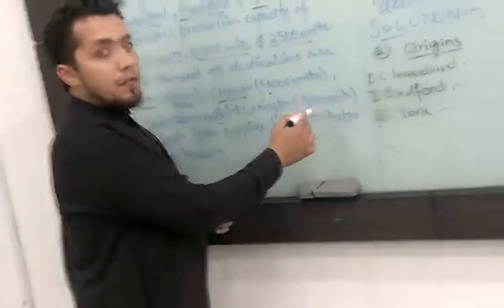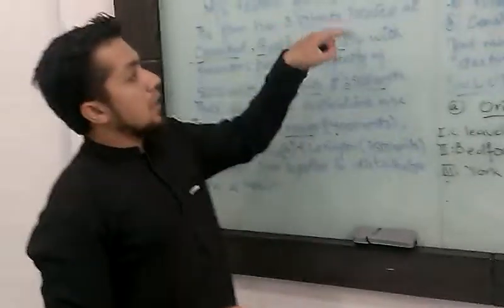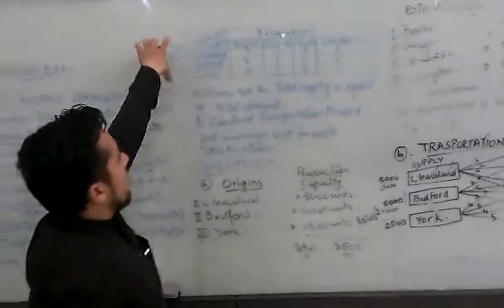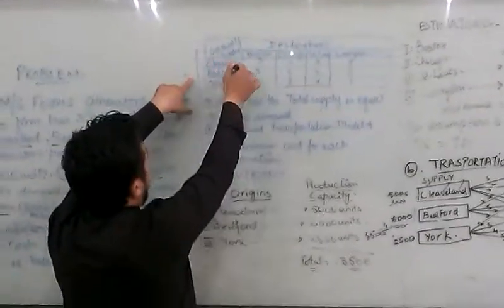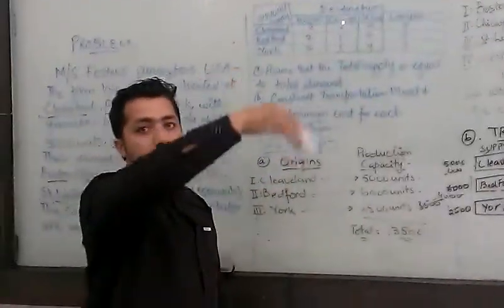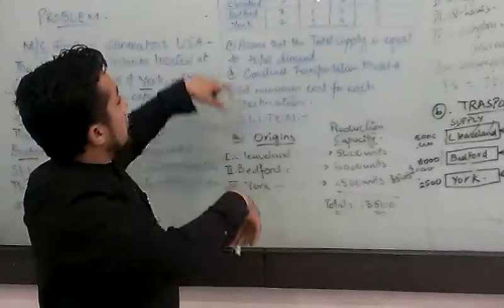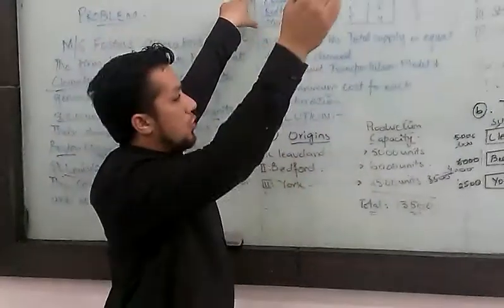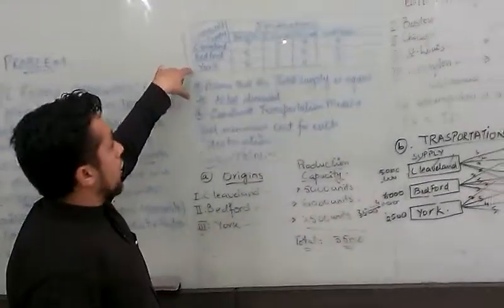And the cost of suppliers and distributors that we have, we have inside the table. You can see in here, we have a table. In the table, we have origin supplier. Origin means from a place we are distributing. The origins are Cleveland, Bedford, and York. These are the origins from here, and these are the places that we are distributing.